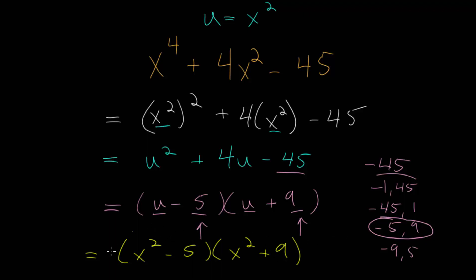If we wanted, we could factor this further since this is a difference of two squares. If we rewrote 5 as (√5)^2, then you can see we do have a difference of two squares there. So we could continue factoring that,